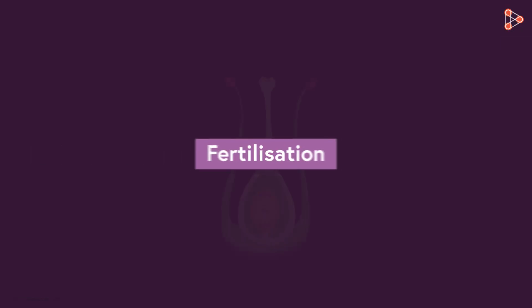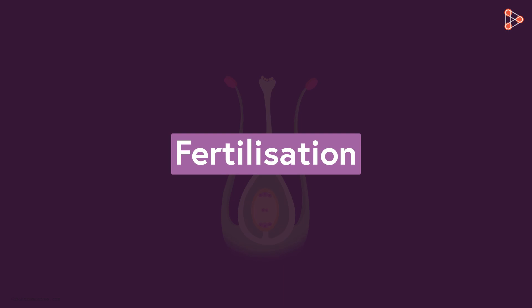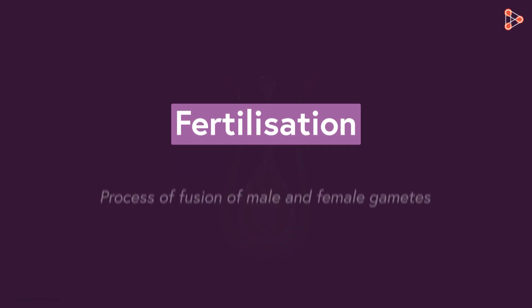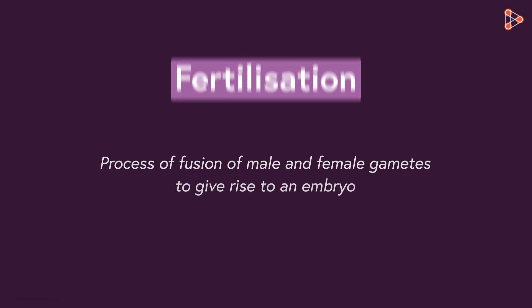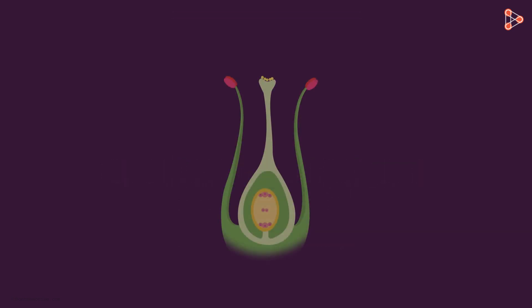Now let's get back to the fertilization process in plants. It is the process of fusion of male and female gametes to give rise to a new embryo. After pollination is successfully accomplished, how does fertilization occur in plants?